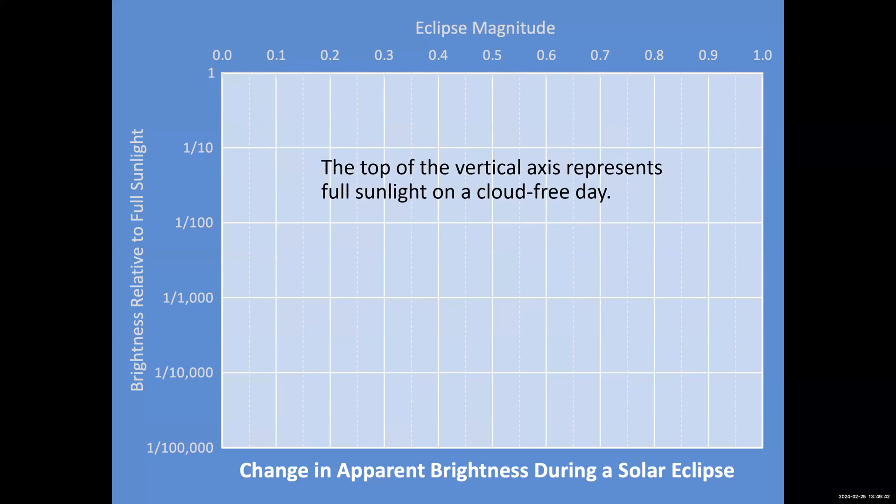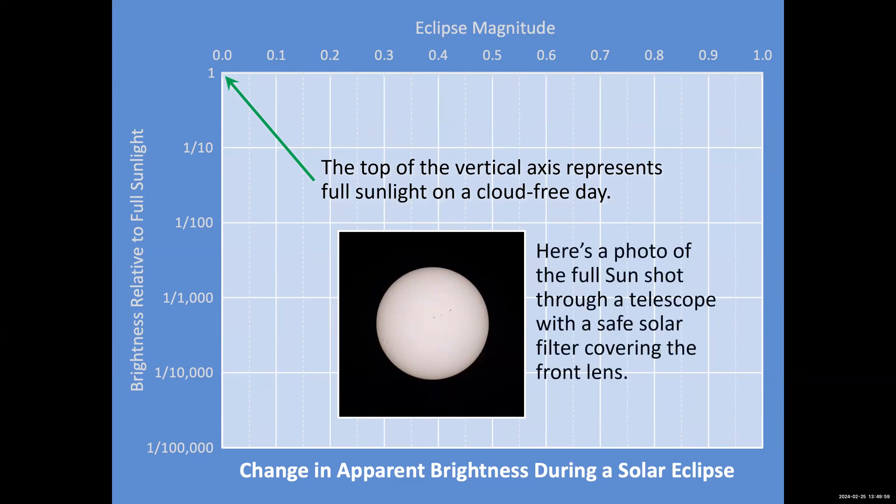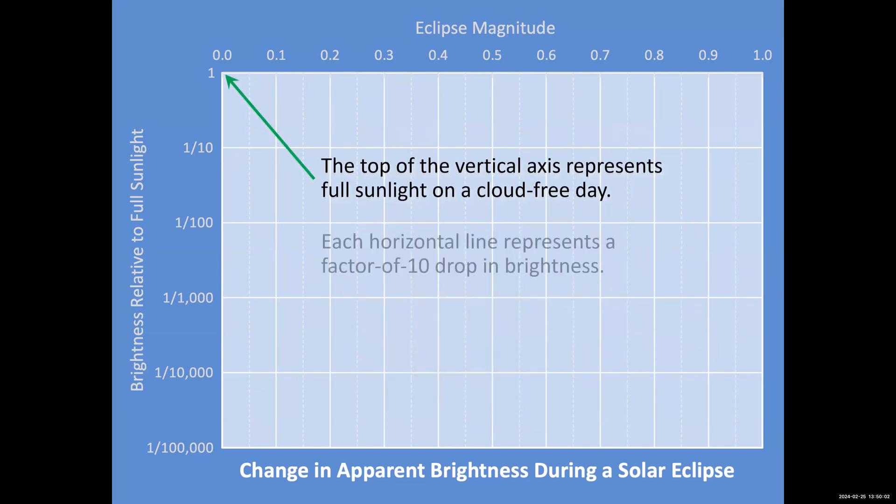In this graph, the top is where you are seeing full sunlight, one full sun on a cloud-free day. Here's what it looks like through a solar filter taken with a telescope with an appropriate filter on it. This vertical axis means we are dropping by a factor of 10 with each one of these steps. This is what we call a log scale. So it goes down to a tenth of the brightness, then a hundredth, then a thousandth, then a ten thousandth, and then a hundred thousandth.